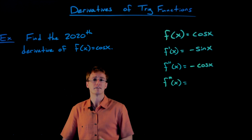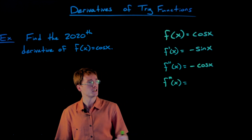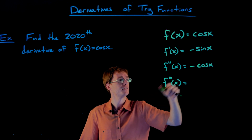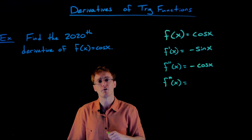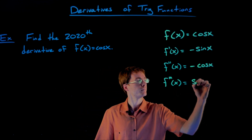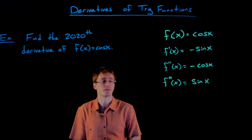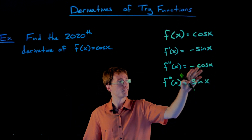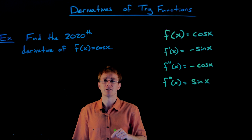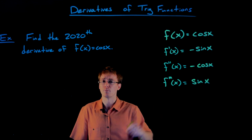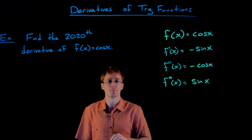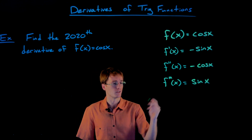We're a bit closer to our goal of finding the 2020th derivative, but next up is the third derivative. To find it, we need the derivative of our second derivative, which is the derivative of negative cosine of x. That gives us positive sine of x — the negative out front multiplies the derivative of cosine, which is negative sine, turning it back into positive sine.